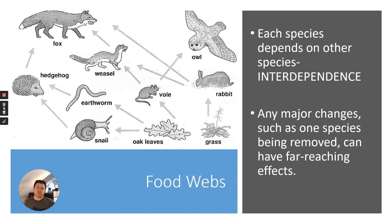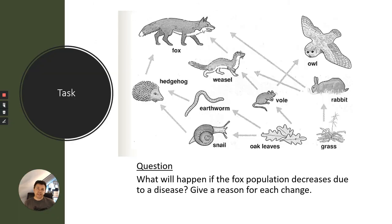In this food web you can see the producers are oak leaves from an oak tree and grass. The primary consumers are snails, earthworms, voles, and rabbits. The secondary consumers that eat the primary consumers are hedgehogs, weasels, and owls. Then the tertiary consumer is the fox — the fox eats weasels or hedgehogs and also eats rabbits.